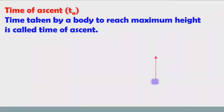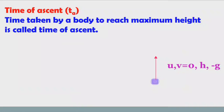Consider an object thrown into air with certain velocity. Here, u is the initial velocity. When it reaches maximum height, its velocity will become zero. The velocity slowly decreases with height, and finally becomes zero. So v is equal to zero. h is the height. The object is moving opposite to the direction of acceleration due to gravity, so a is equal to minus g.